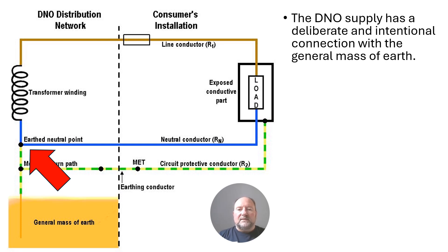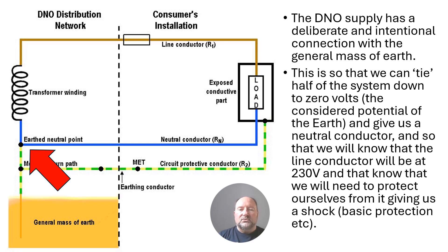Now, that is then what gives us our line conductor that we know is then at 230 volts and that the neutral will be at or around zero volts.